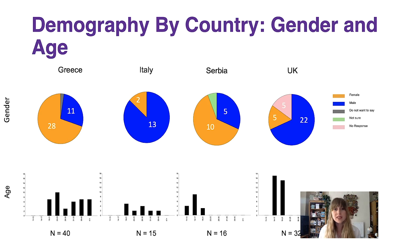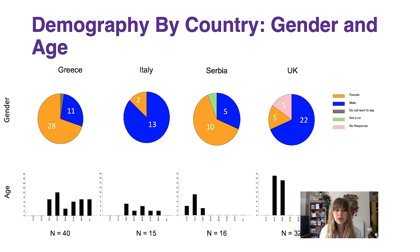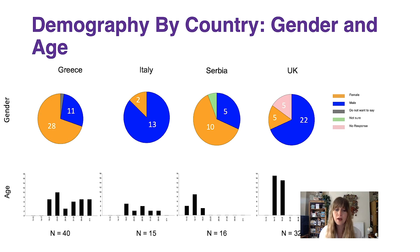Serbia had 16 students; 10 of these students were female and five were male, and the remaining student wasn't sure of their gender. The age profile from Serbia was the youngest, with students ranging from 11 to 13 up to 18 to 21.